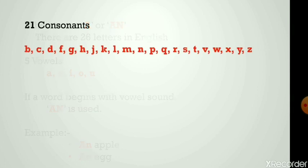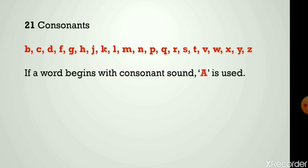There are 21 consonants: b, c, d, f, g, h, j, k, l, m, n, p, q, r, s, t, v, w, x, y, z. If a word begins with a consonant sound, 'a' is used. For example: a doctor, a color.